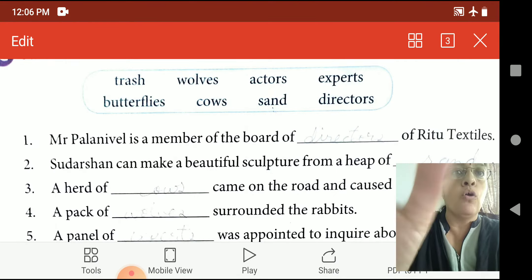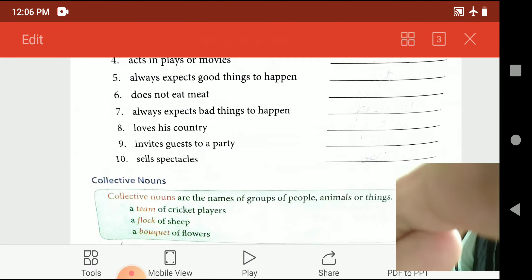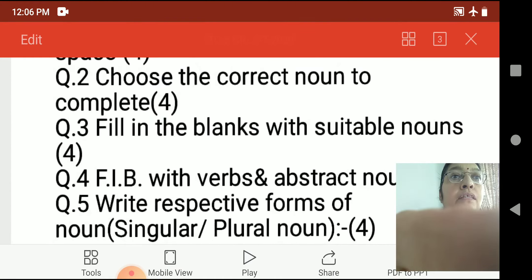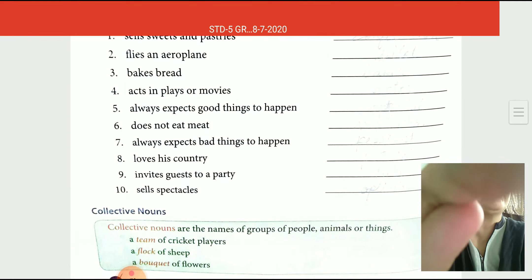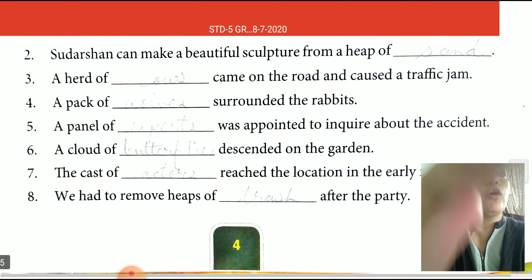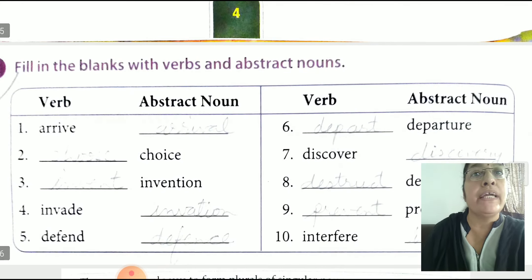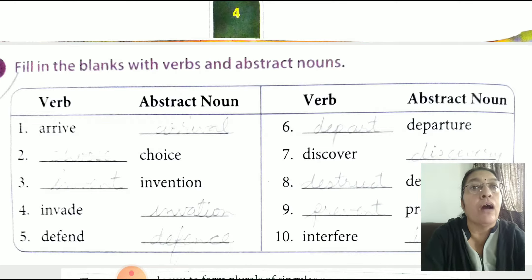Now we go as per our paper style roman 4. Fill in the blanks with verbs and abstract nouns from unit 1 only. I give arrive, so you have to write its abstract noun from options. Invent, so you have to correct verb from this option. Understand.